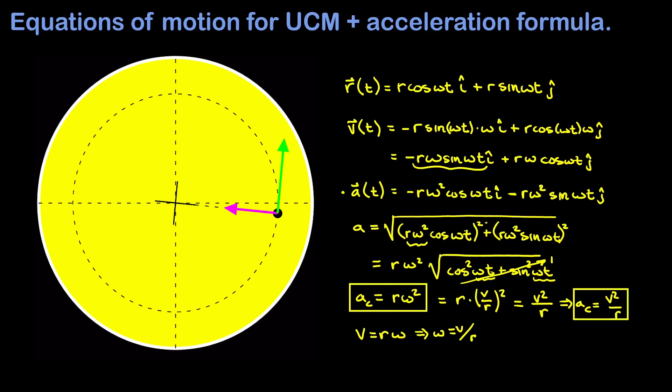If you want to review the prerequisite topics for this video, the previous two videos are linked at the left. The first video in the series, linked at the top left, defined angular speed and expressed angle as a function of time for uniform circular motion. The second video, linked at the bottom left, derived the relationship between linear and angular speed: v equals r omega. Thanks for watching.